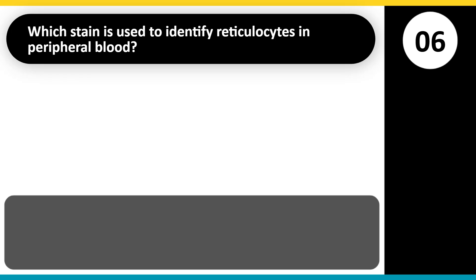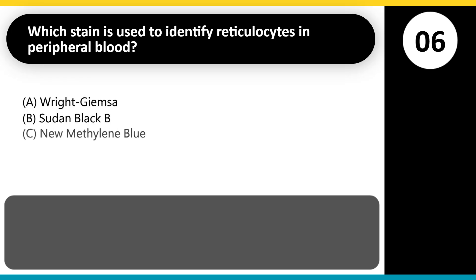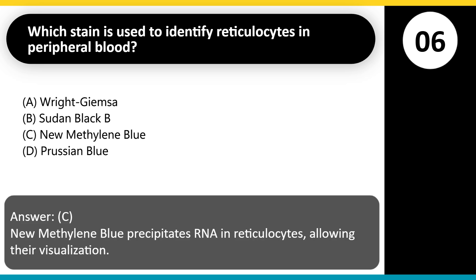Which stain is used to identify reticulocytes in peripheral blood? A. Wright-Giemsa. B. Sudan black B. C. New methylene blue. D. Prussian blue. Answer: C. New methylene blue precipitates RNA in reticulocytes, allowing their visualization.